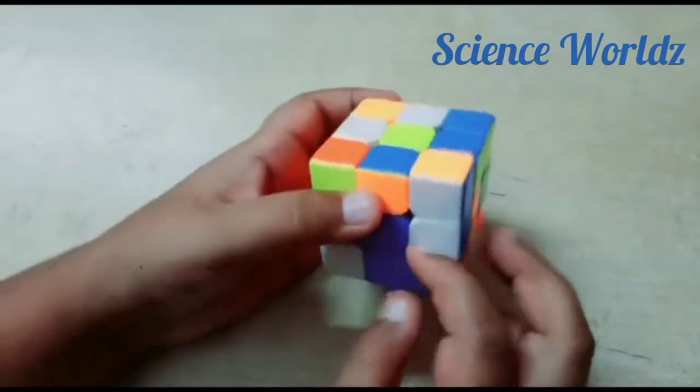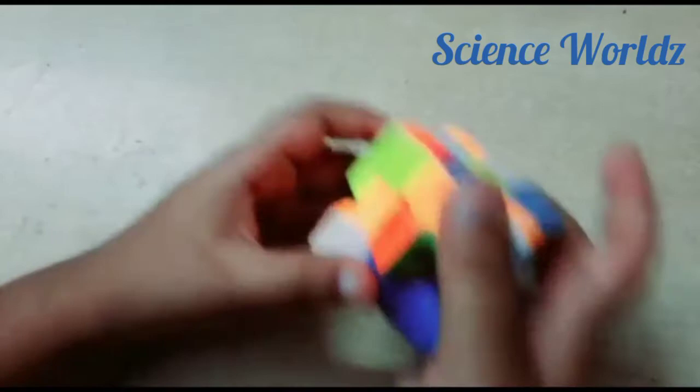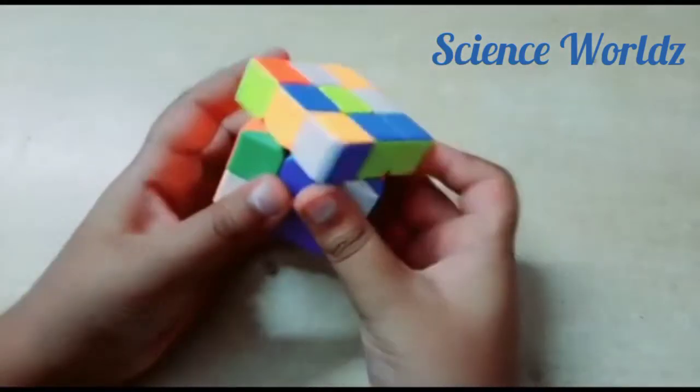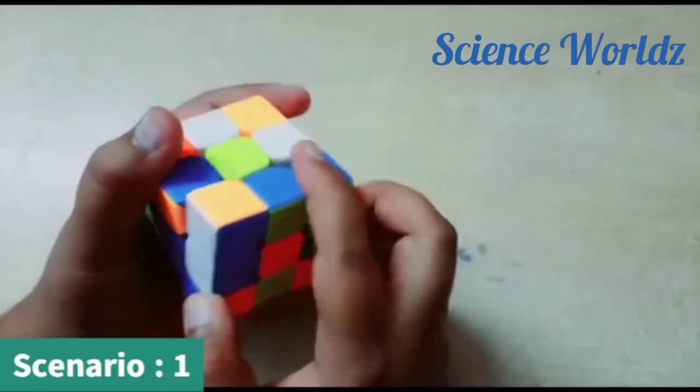For this one, it's on the second layer. And by the way, this is the bottom layer. This is the second, middle layer, top or third layer. It's on the second layer so we can do it easily by turning this.